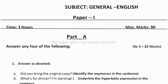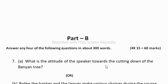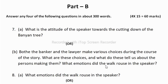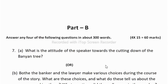Each question carries 5 marks. In Part B you have to answer any 4 summaries out of 8. Each question carries 15 marks, making 60 marks altogether. If you do all 4 summaries you will get 60 marks, as each summary carries 15 marks.